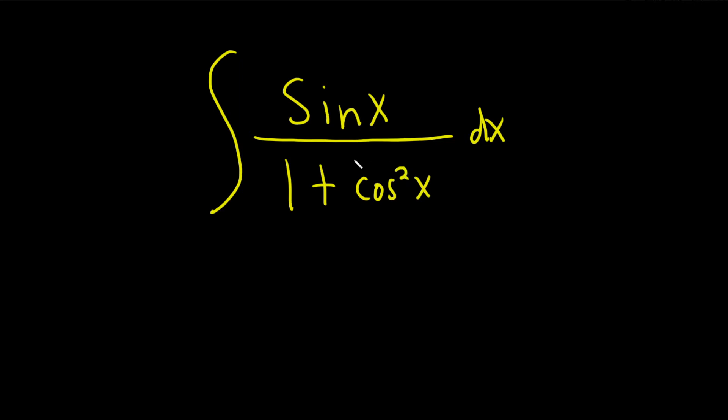We'll get du, which is 2 cosine x, and then times the derivative of the inside. So we'll end up with a cosine and a sine, and we only have a sine up here.